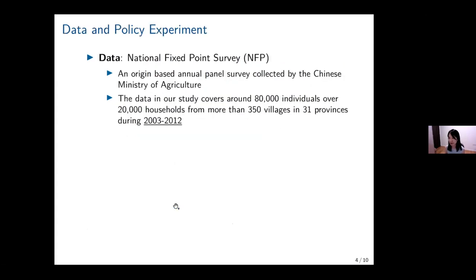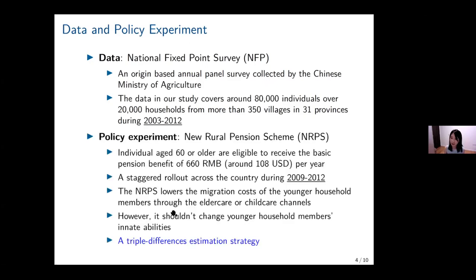The data we use is the National Fixed Point Survey, a rural household survey conducted by the Chinese Ministry of Agriculture. The survey tracks individuals and households across years. In our data, we observe more than 80,000 individuals from 31 provinces in China over the period 2000 to 2012.